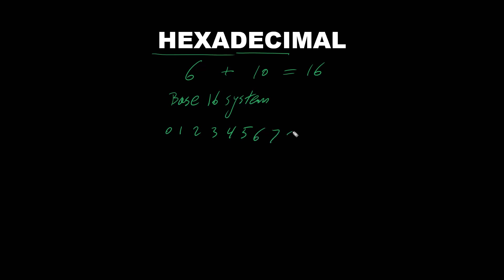...six, seven, eight, nine, and then A, B, C, D, E, F. To keep single-digit representation, hexadecimal uses the letters A through F. So A corresponds to ten in decimal, B is 11, C is 12, D is 13, E is 14, and F is 15. As we can see, zero to F gives a total of 16 different digits, confirming that hexadecimal is a base-16 system.